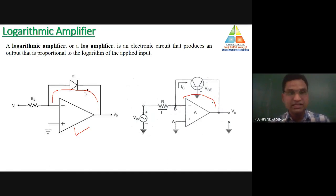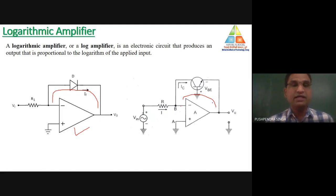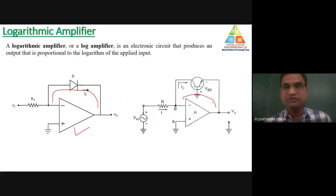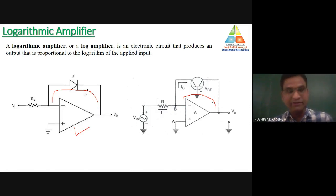Today, one by one, we will discuss: first, the logarithmic amplifier using diode and derive the output expression; then temperature compensation if the circuit is affected by temperature; then the operation using a transistor and its output expression and temperature compensation. We will not discuss the antilog amplifier as it is not in your curriculum.